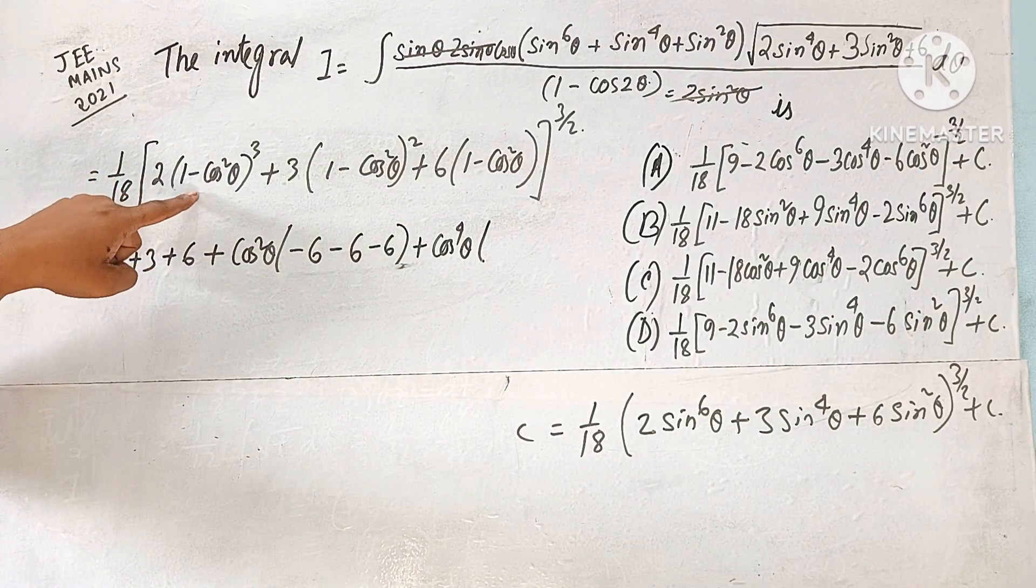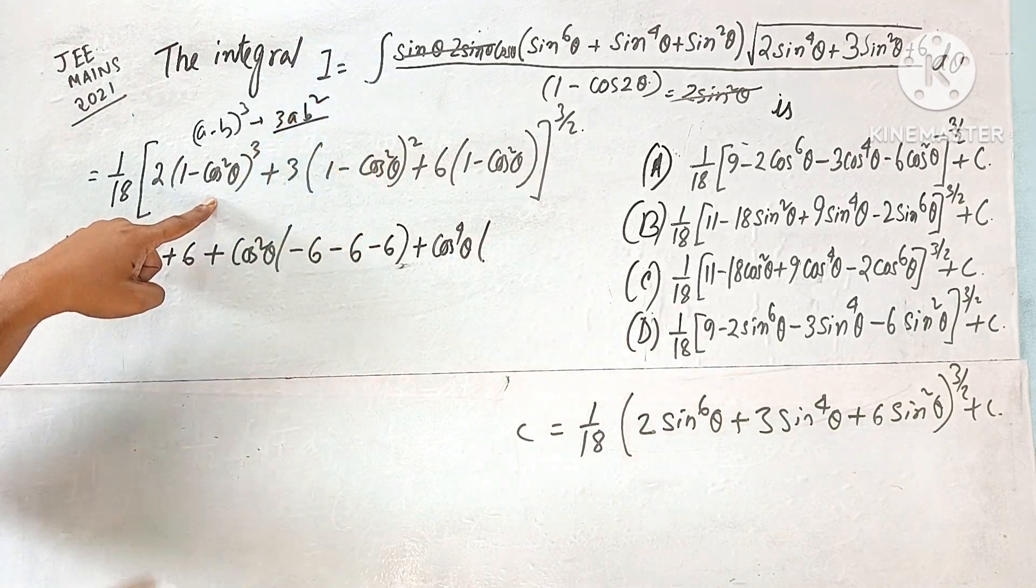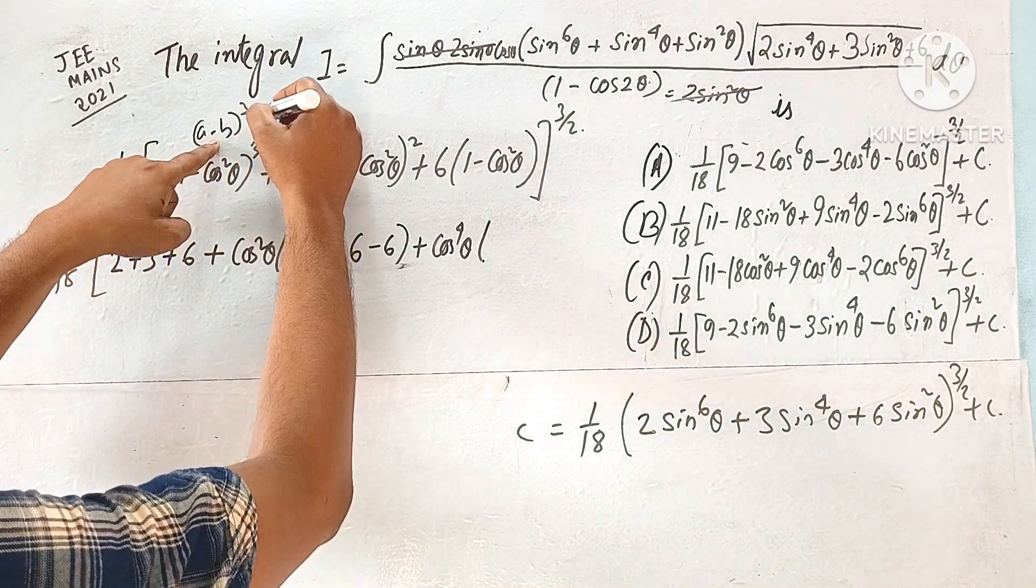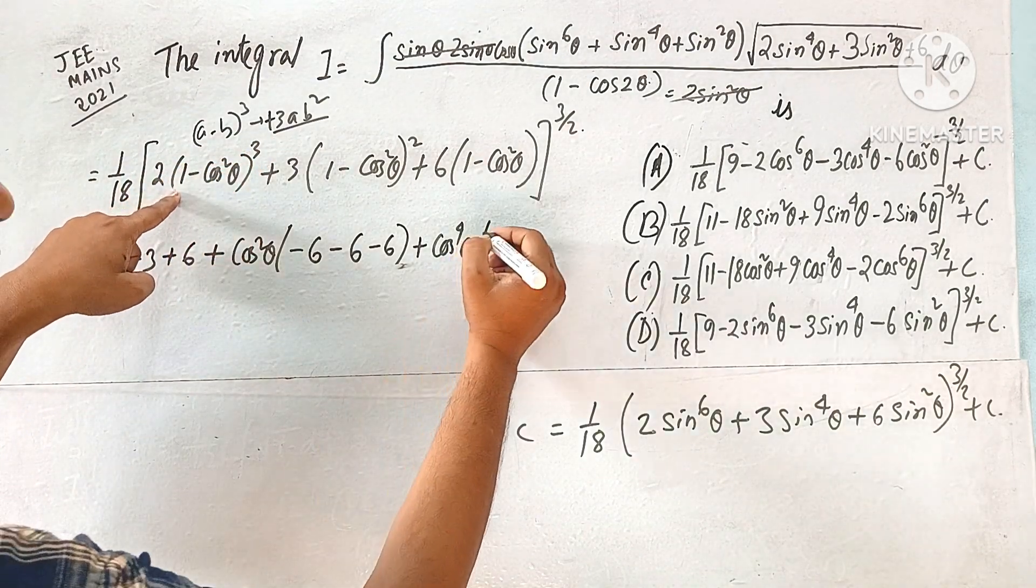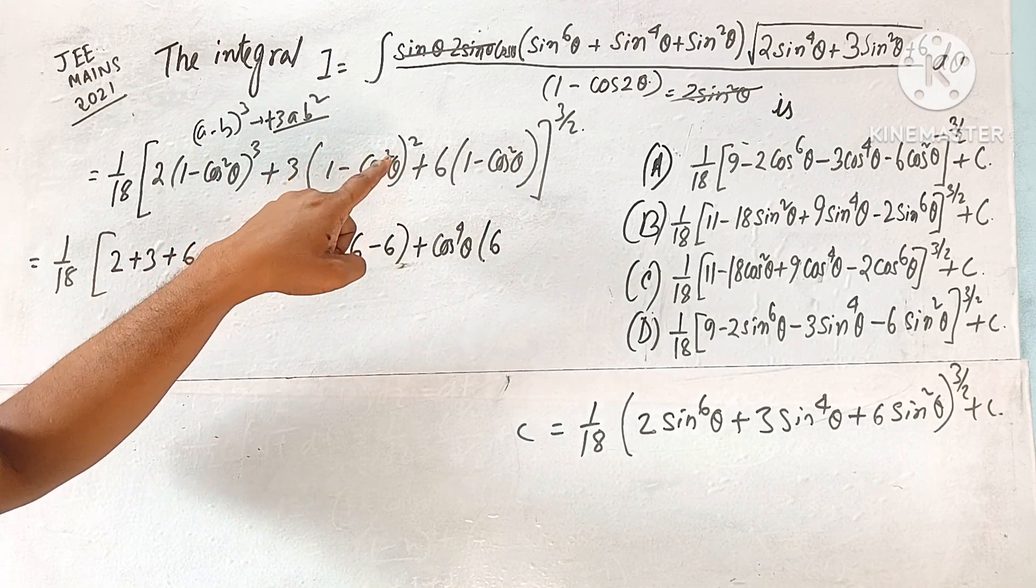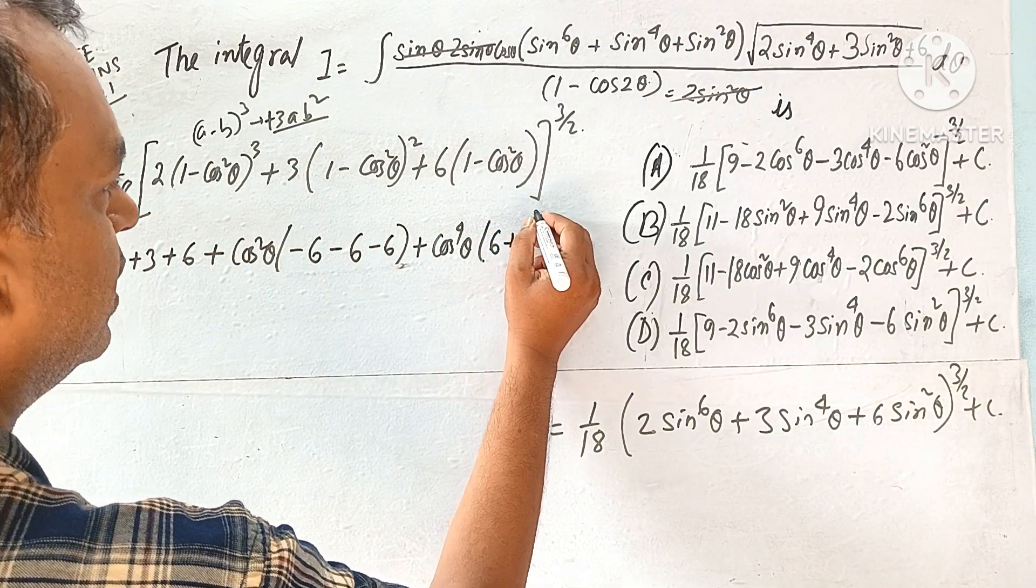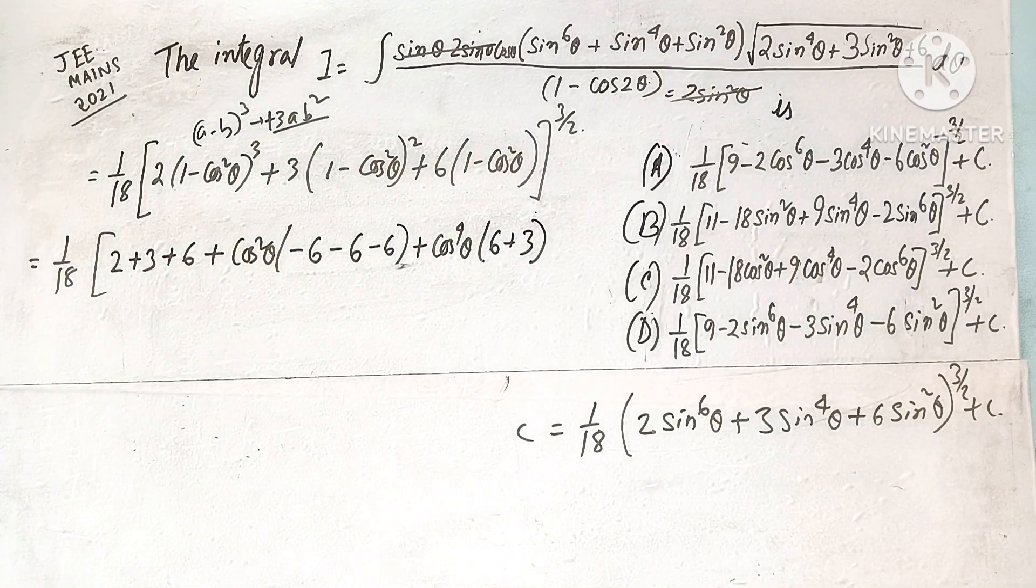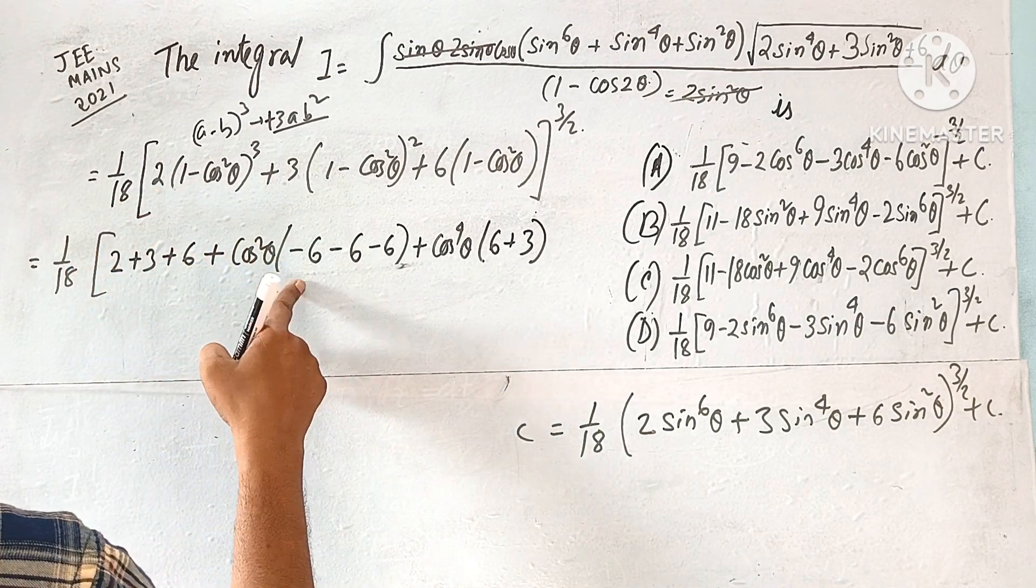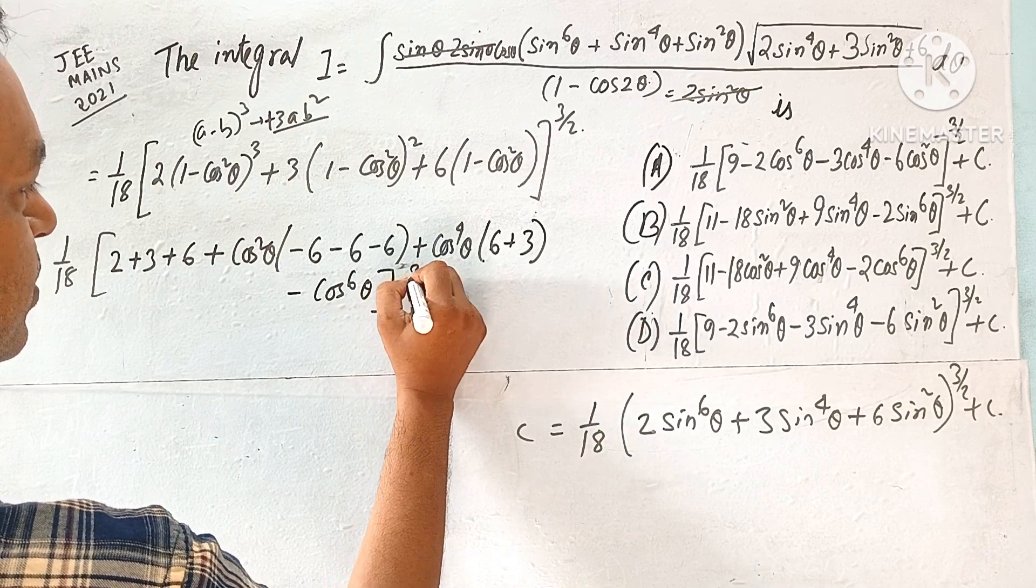And here, and here, here cos square, and here cos square, and here, cos square 3a square, 3ab square, a square, a minus b whole cube, 3ab square, 3ab square, ab square, couple of. And now, minus 2, minus 2, cos to the power 6 θ, 2 to the power 3 by 2 plus C.